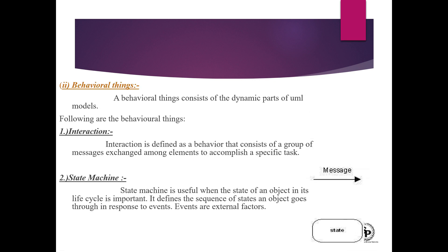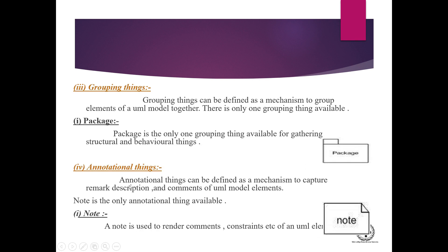The second type of thing is behavioral things. A behavioral thing consists of the dynamic part of the UML model — that means the part that is movable. The behavioral things are: interaction, state machine, grouping things, and annotational things.